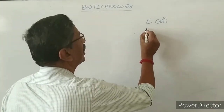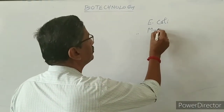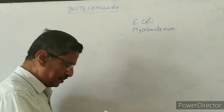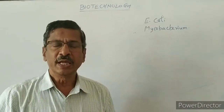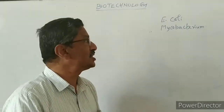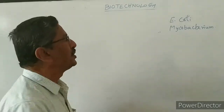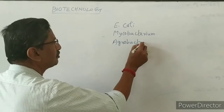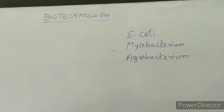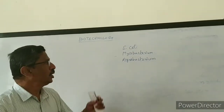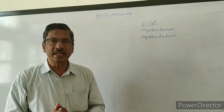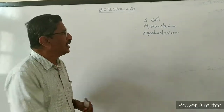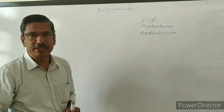Next one is mycobacteria — another type of microorganism. Biotechnological research is going on with this as well. Then agrobacterium — another type of bacteria — where a lot of genetic changes are taking place, and all are important to give us some new products. I am giving only three examples; many more microorganisms are involved.